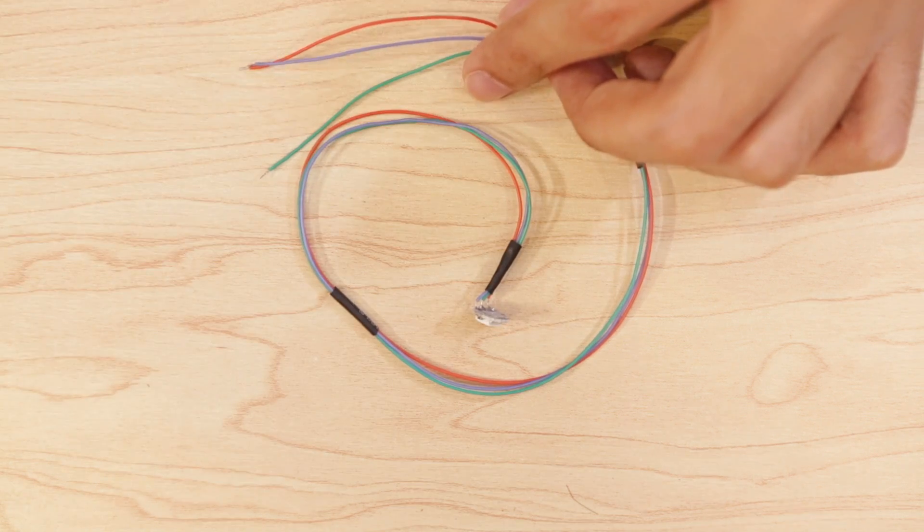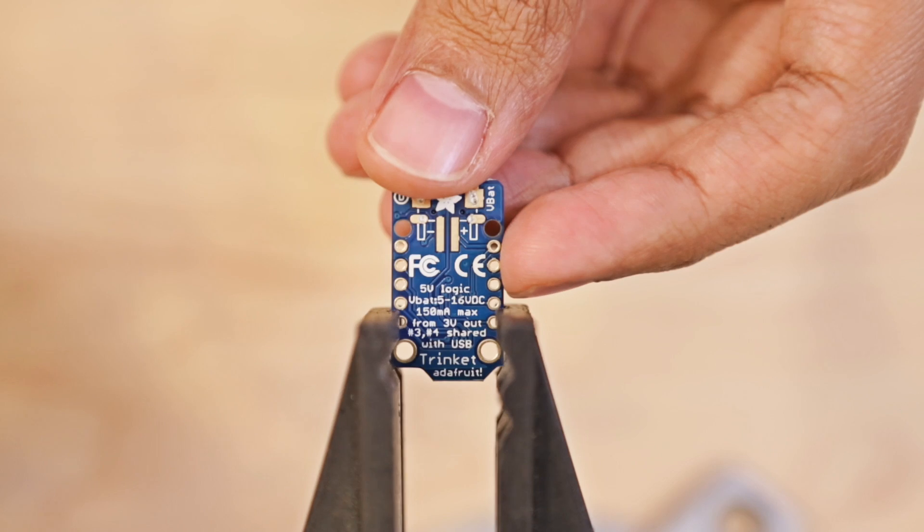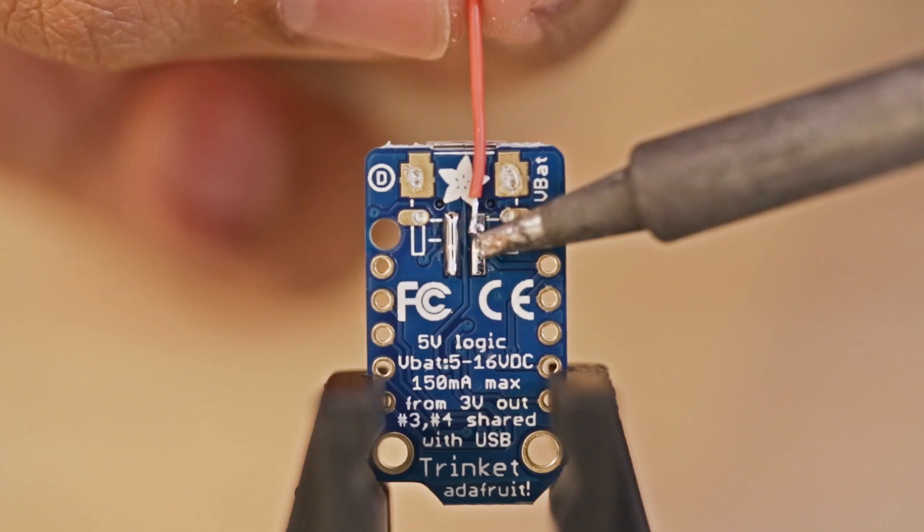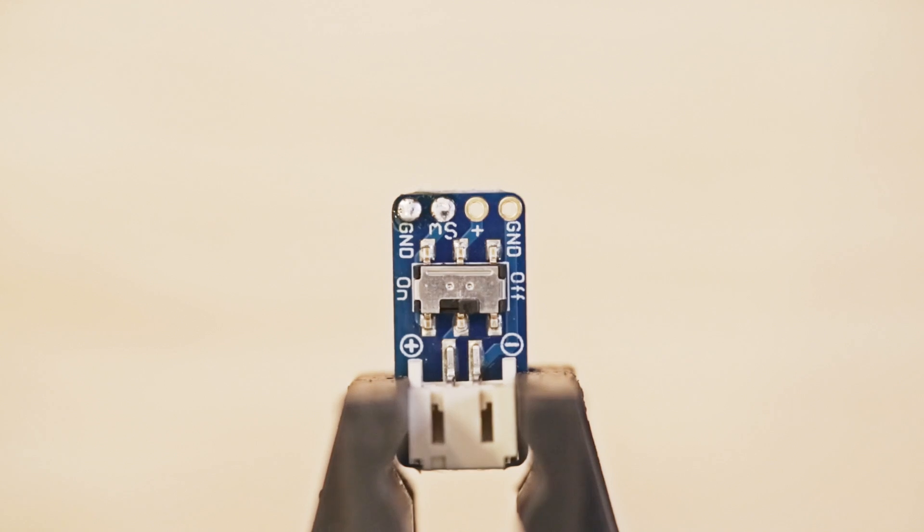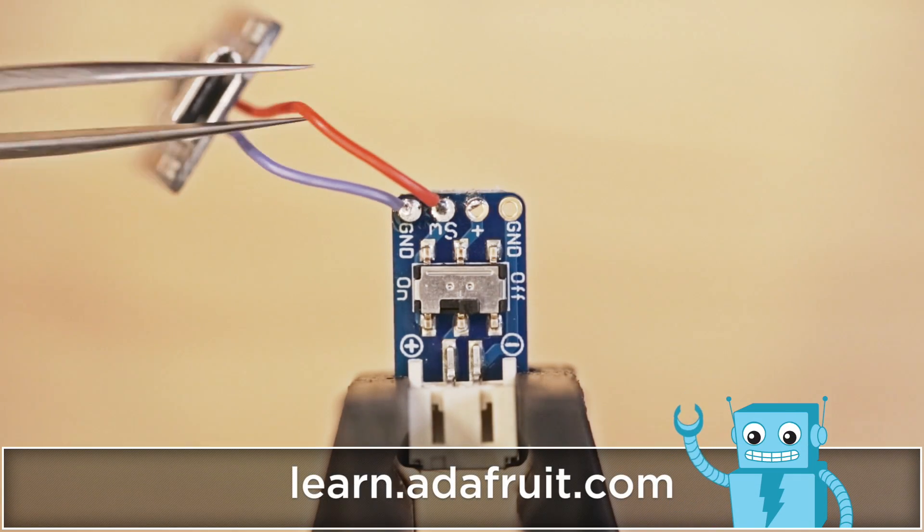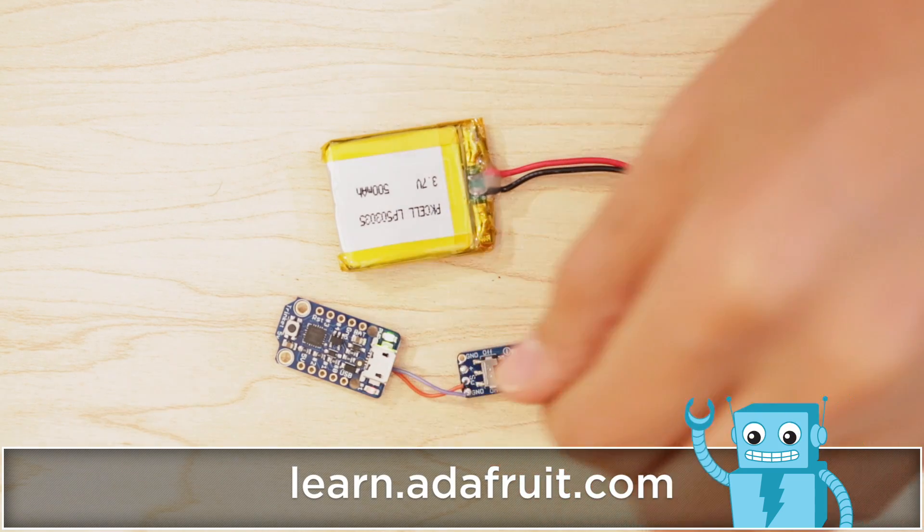Next, I can get started on wiring up the Adafruit trinket. On the bottom of the board are 2 pads for power and ground. I tinned those up and connected 2 wires. Then I soldered the power connection from the trinket to the SW pin on the JST breakout, and then ground to ground. Now I can plug in the LiPo battery and flip the switch to test out the circuit.